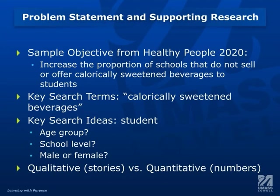Third, you also want to know if you want quantitative or qualitative research. Qualitative research are stories that we tell — they might be focus groups, panels, or interviews. Quantitative research uses hard numbers: how many schools currently offer calorically sweetened beverages, and how many do we want to get it down to? That's a quantitative way to measure that change. There might be a mix of both, or more quantitative than qualitative or vice versa, but you want to know what you're looking for as you start your research.